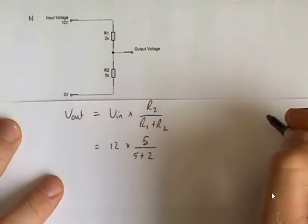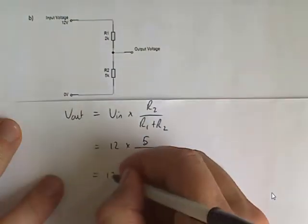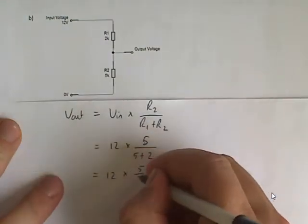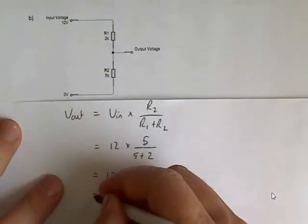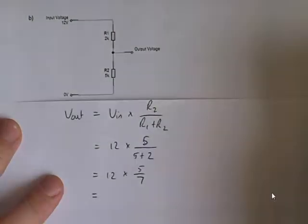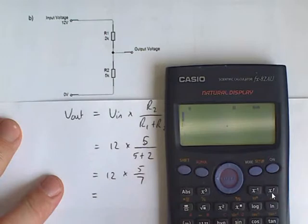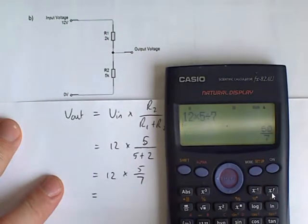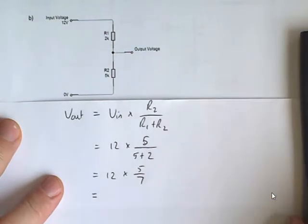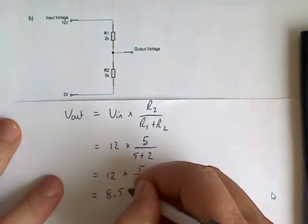equals 12 times 5 over 7, equals 8.57 volts.